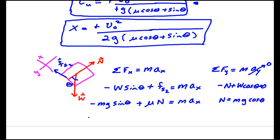Plugging this in for N, I get minus mg sin θ plus μmg cos θ is maₓ.